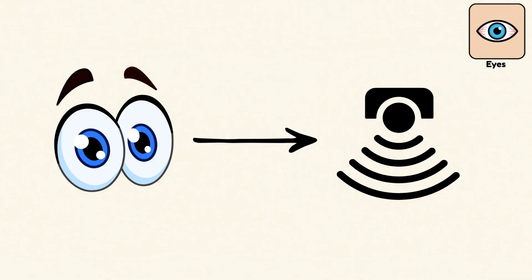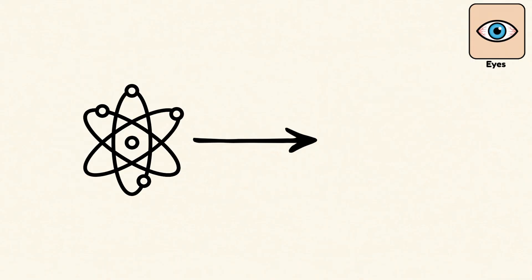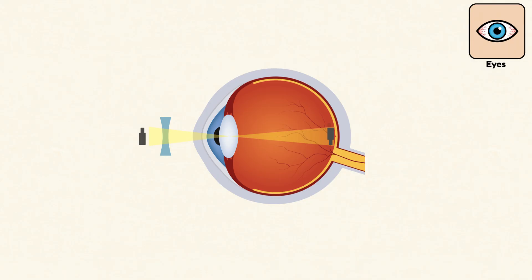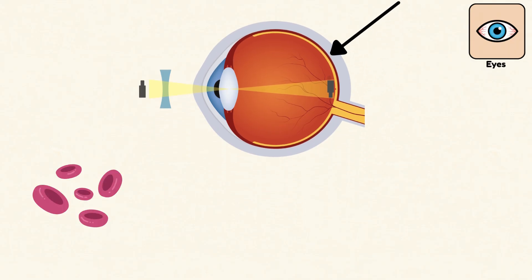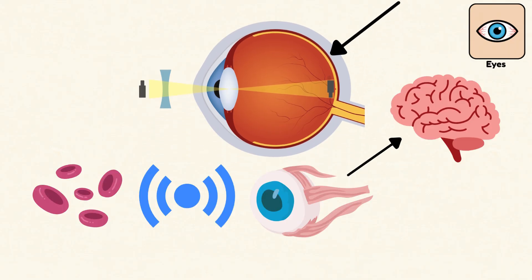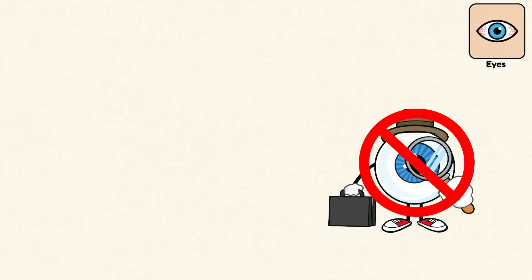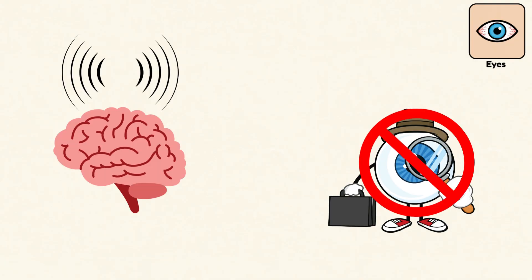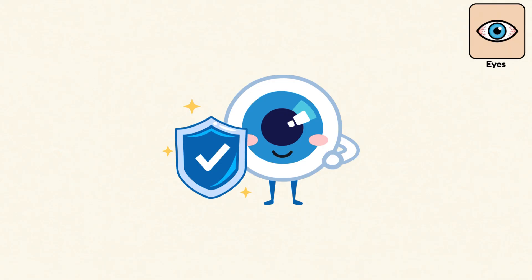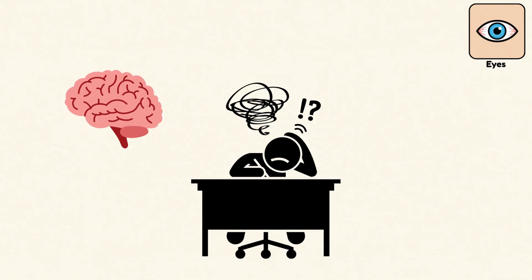Eyes. The eyes are your light sensors, translating photons into vision. Light enters the cornea, bends through the lens, and hits the retina, where specialized cells fire signals through the optic nerve to the brain. Vision isn't just about eyes, it's about how your brain interprets those signals. That's why your eyes can be healthy, yet you still can't see clearly if the brain isn't processing the signals right.